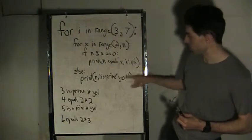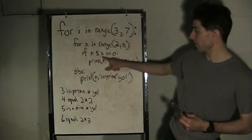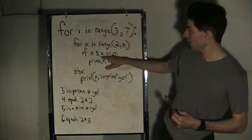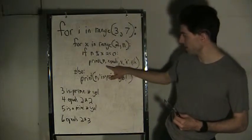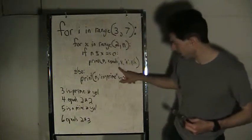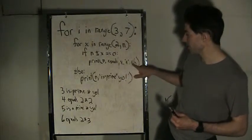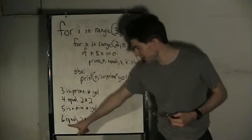6 mod 3 or 6 mod 2 equals zero, which it does, so then it prints '6 equals 2 times 3', which is that. And what if it's 5? 5 mod 2, 5 mod 3, or 5 mod 4...